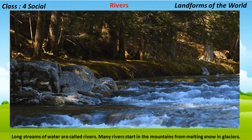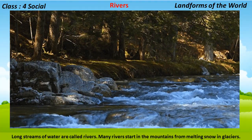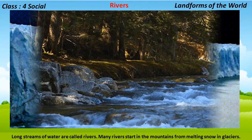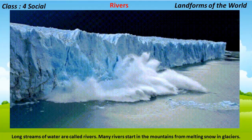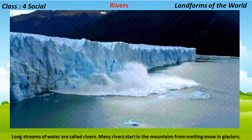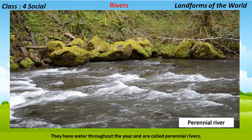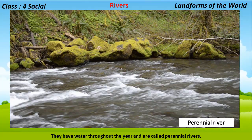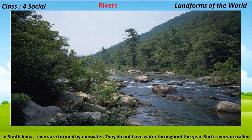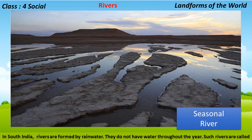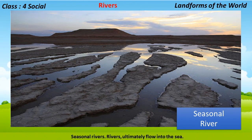Long streams of water are called rivers. Many rivers start in the mountains from melting snow in glaciers; they have water throughout the year and are called perennial rivers. In south India, rivers are formed by rainwater; they do not have water throughout the year, and such rivers are called seasonal rivers.